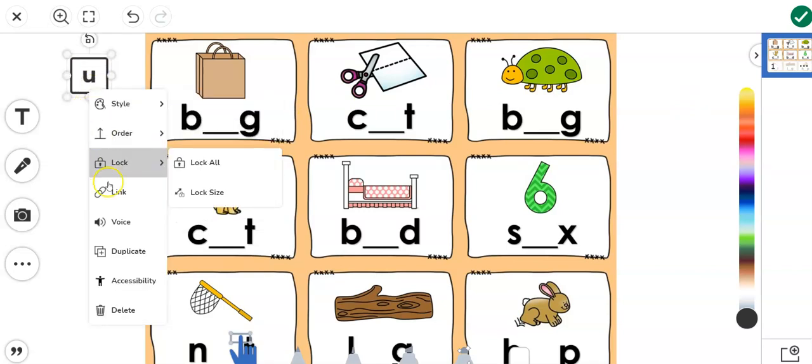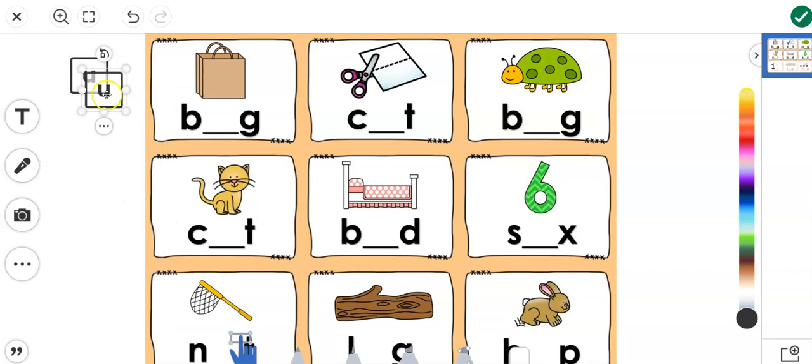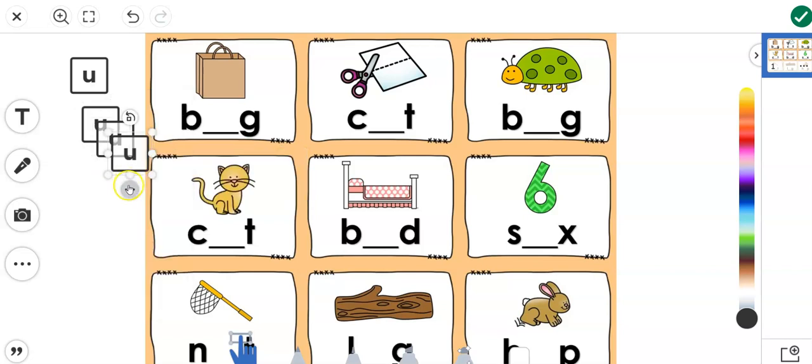Hit your three dots and say duplicate because I notice here it also needs a U. So you're going to need more than one U. So I'm going to duplicate it a few times so you get the idea.